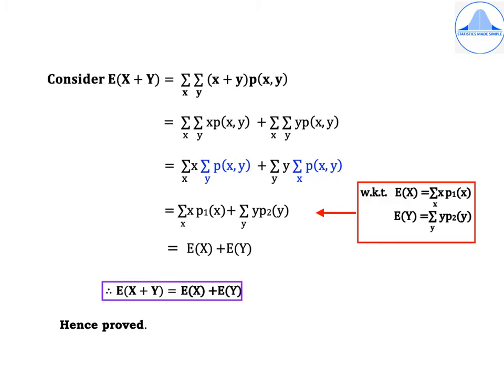The terms summation over y of p(x, y) and summation over x of p(x, y) are highlighted in blue. We know that summation over y of p(x, y) = p1(x), and summation over x of p(x, y) = p2(y). So we get summation over x of x·p1(x) plus summation over y of y·p2(y). Since E(x) = summation over x of x·p1(x) and E(y) = summation over y of y·p2(y), highlighted in the red box, the next step gives E(x) + E(y). Therefore E(x + y) = E(x) + E(y). Hence the theorem is proved.